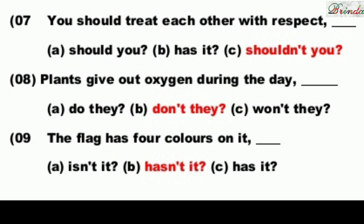Next: The flag has four colors on it. 'Has' is present, so the negative tag uses 'hasn't'. Options: isn't it, hasn't it, has it. The answer is: hasn't it.